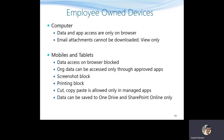For employee-owned computers, data and apps can only be accessed through a browser — you cannot access email through the Outlook application. If you need Outlook, you must use the browser. Email attachments cannot be downloaded; they can only be viewed. This is a security measure because downloading attachments to a personal PC puts corporate data in the user's hands.